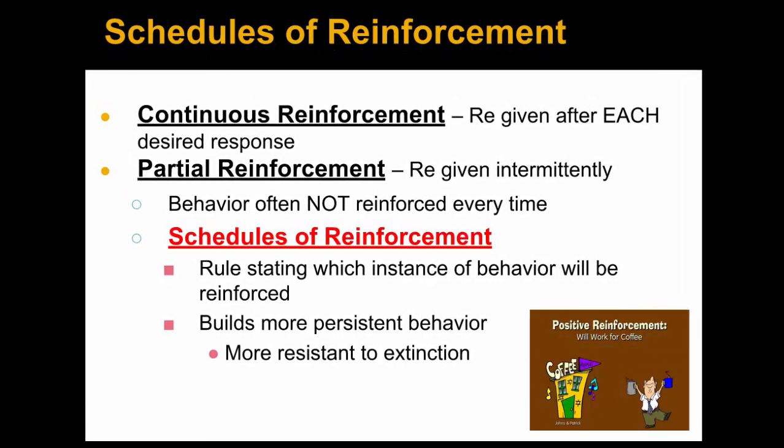So far, we've just been talking about what we call continuous reinforcement, where we give reinforcement after every time the behavior occurs. For example, every single time you do a homework assignment, I put a grade on it. What would happen if I stopped grading your homework? You'd probably stop doing your homework. So if I want to have a more persistent behavior, then I would reinforce it partially — give it intermittently or every so often.